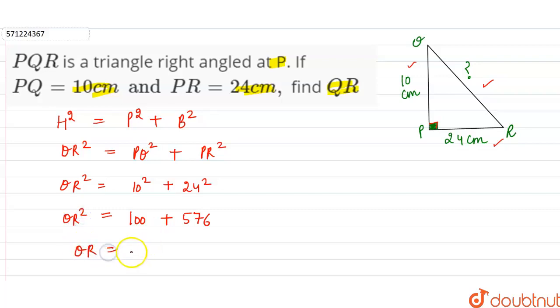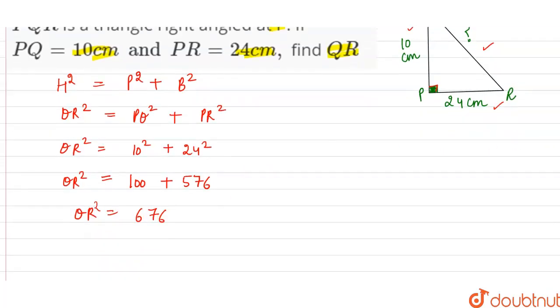That is equal to 676. So QR square is equal to 676. Now to find the value of QR we have to take the under root of both sides, so QR will be equal to under root of 676.